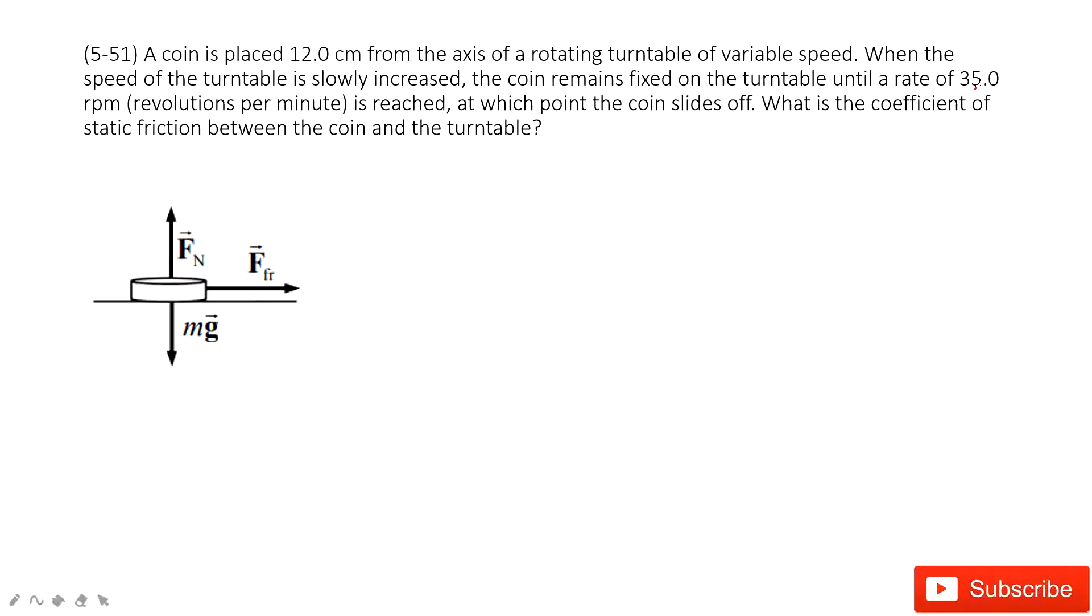But then we need to take care. This velocity tells us it's 35 revolutions per minute, so that means we must convert it to meters per second. How could we do that? We consider the distance it traveled for one circle is 2πr.